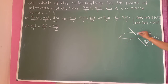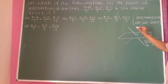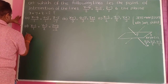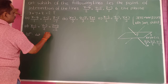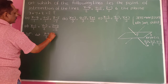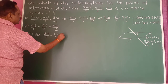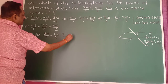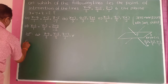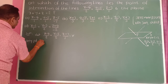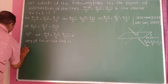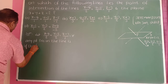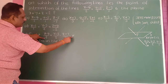Therefore, this point lies on the line. Let us consider the given line: x minus 4 divided by 2 is equal to y minus 5 divided by 2 is equal to z minus 3 divided by 1, equal to some constant R. Therefore, any point of the line gives: 2 into R becomes 2R.